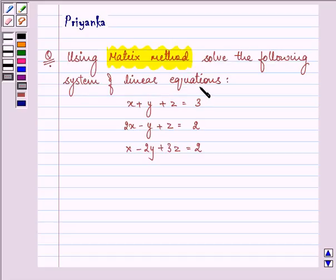Here we have the linear equations: x plus y plus z equals 3, 2x minus y plus z equals 2, and x minus 2y plus 3z equals 2.